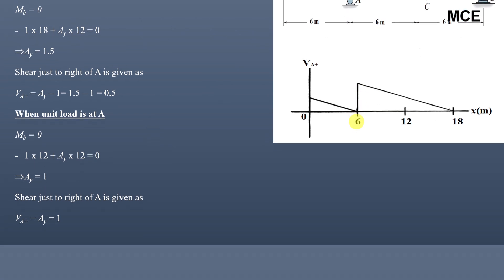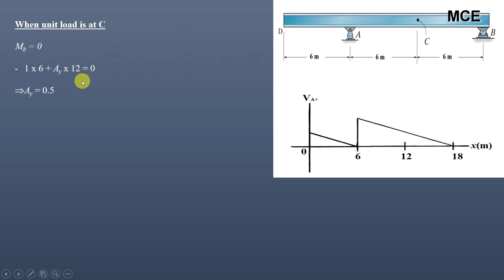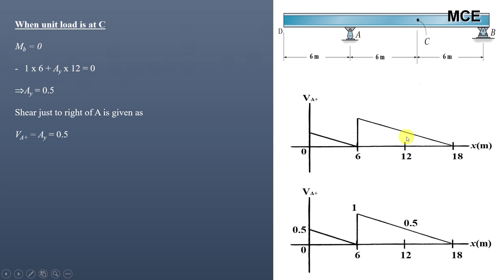To find the ordinate at C (12 meters) for shear just to the right of A, we place the unit load at C and take moments about B equals zero. The moment of the unit load about B is 1×6 (anti-clockwise, negative) and the moment of AY about B is AY×12 (clockwise). This gives AY equal to 0.5. Since only AY acts on section DA, the shear just to the right of A is 0.5. This completes the influence line diagram for shear just to the right of A.